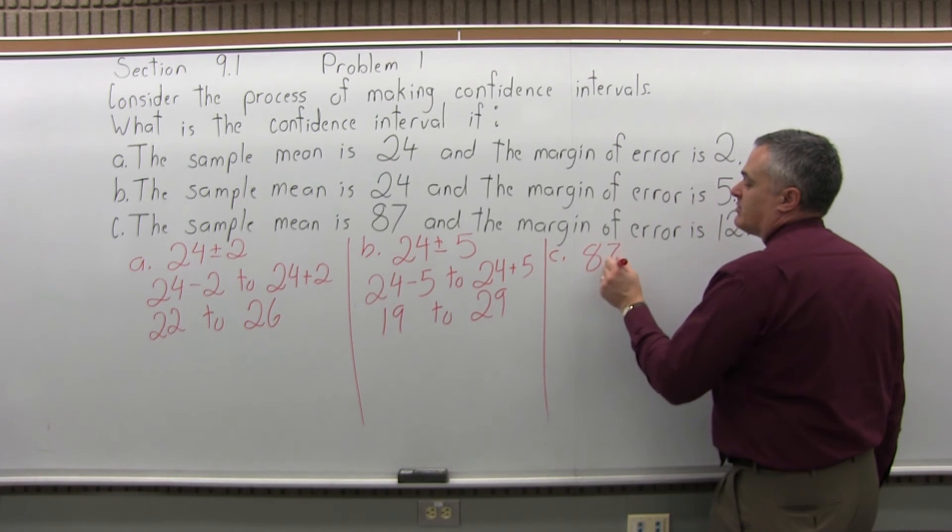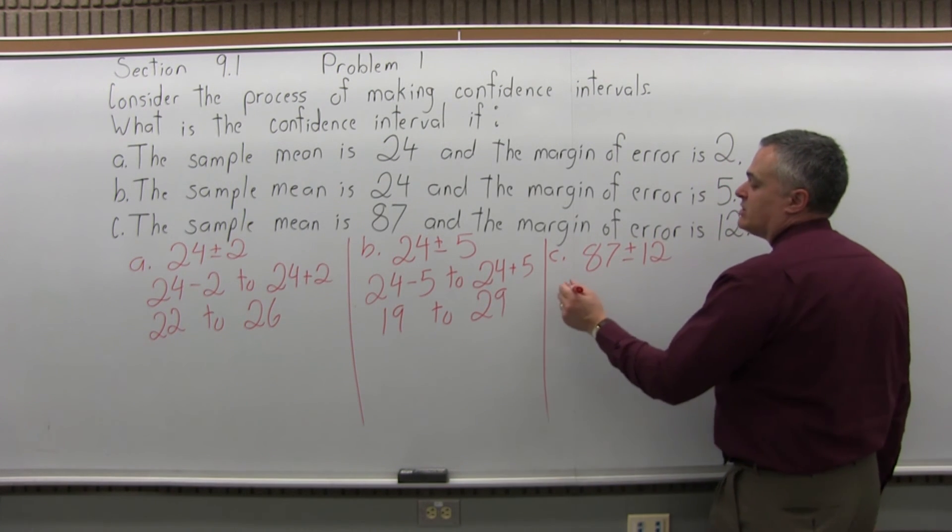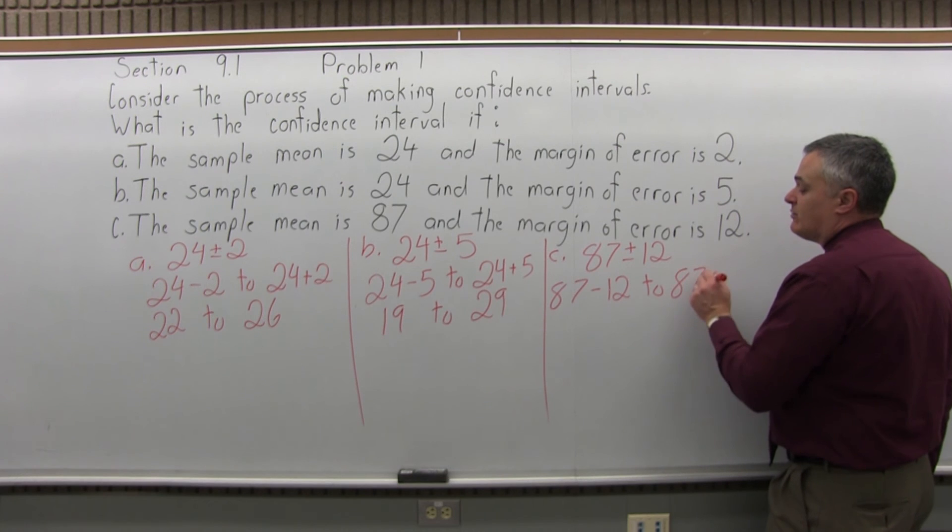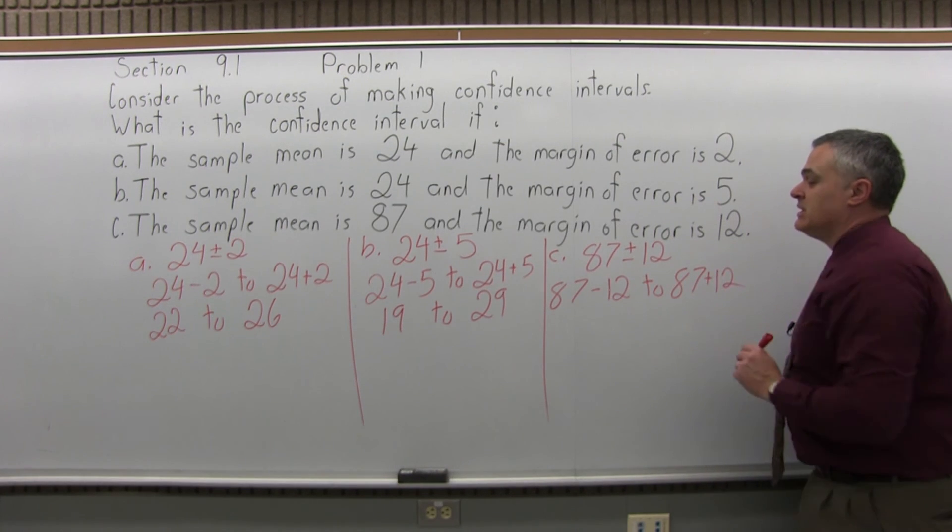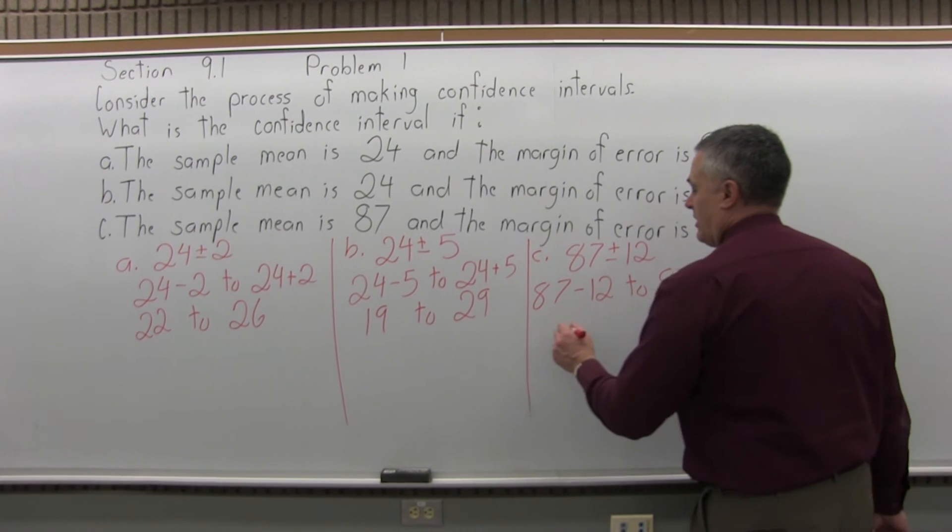So you would have your sample mean of 87 plus or minus the margin of error of 12. So your confidence interval would go from 87 minus 12 to 87 plus 12. So now the low end of your interval, 87 minus 12, would be 75.